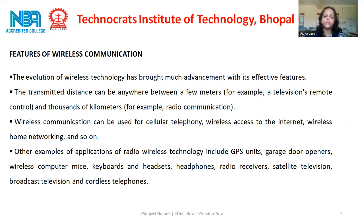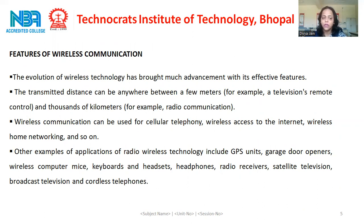What are the features of wireless communication? The evolution of wireless technology has brought much advancement with its effective features. The transmitted distance can be anywhere between a few meters, for example a television remote control, and thousands of kilometers, for example radio communication. Wireless communication can be used for cellular telephony, wireless access to the internet, wireless home networking and so on.